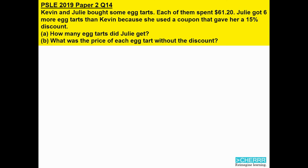ESLE 2019 paper 2, question 14. Kevin and Julie bought some egg tarts. Each of them spent $61.20. Julie got 6 more egg tarts than Kevin because she used a coupon that gave her a 15% discount. Part A: How many egg tarts did Julie get? Part B: What was the price of each egg tart without the discount?